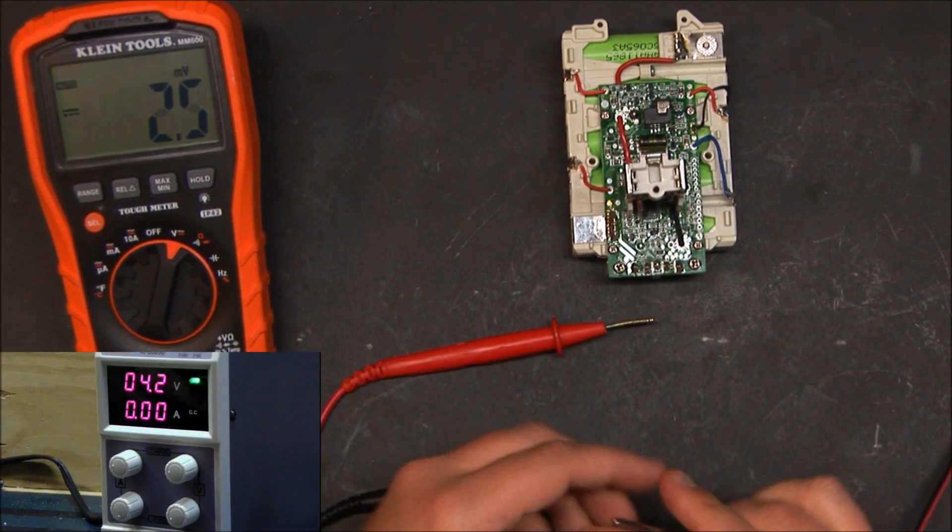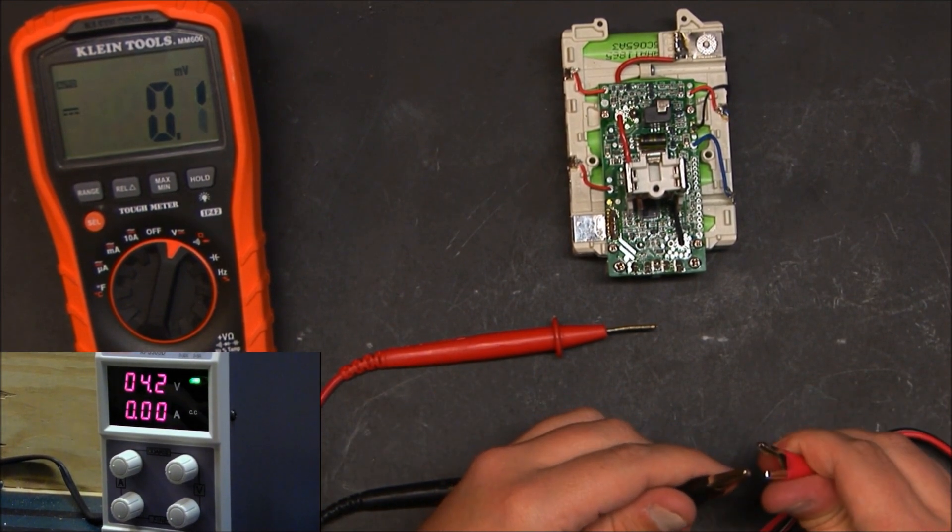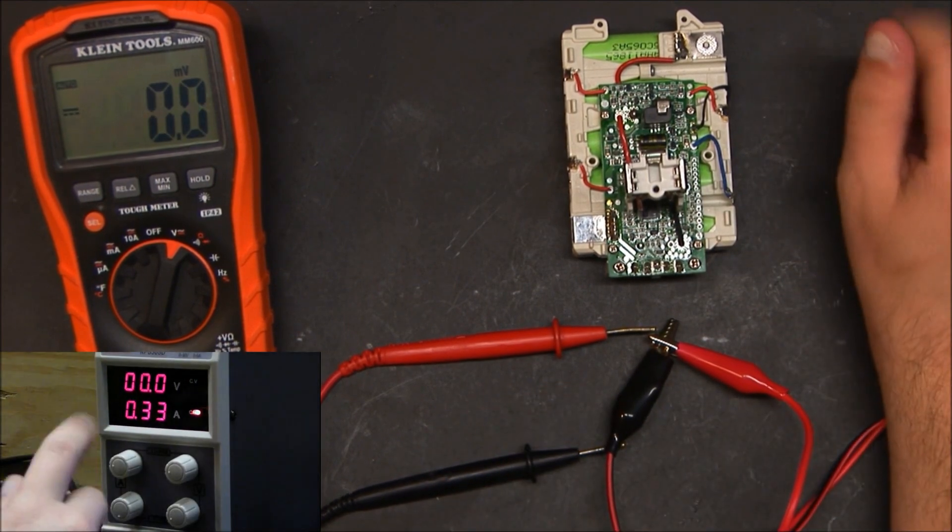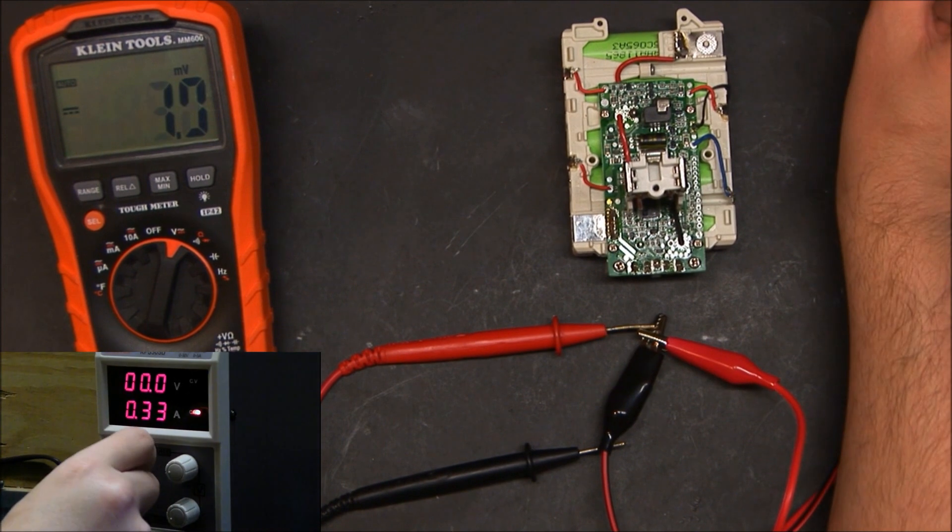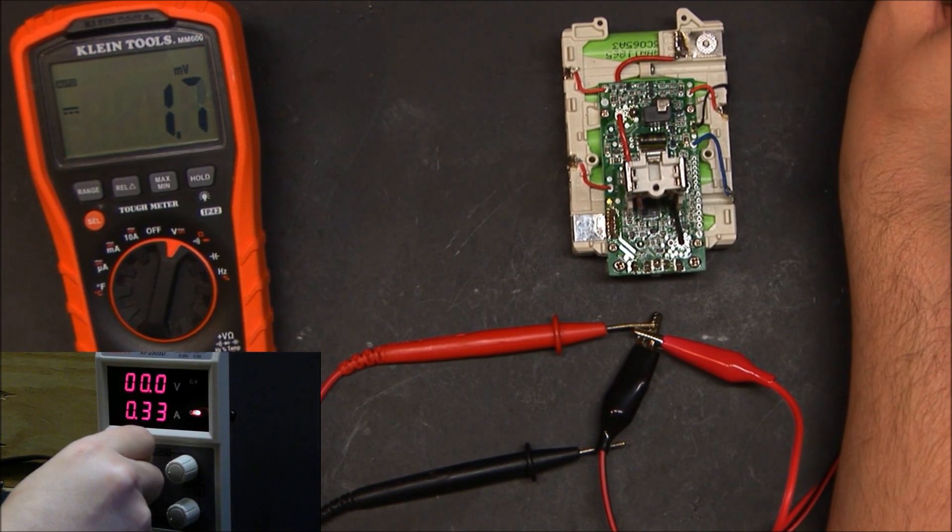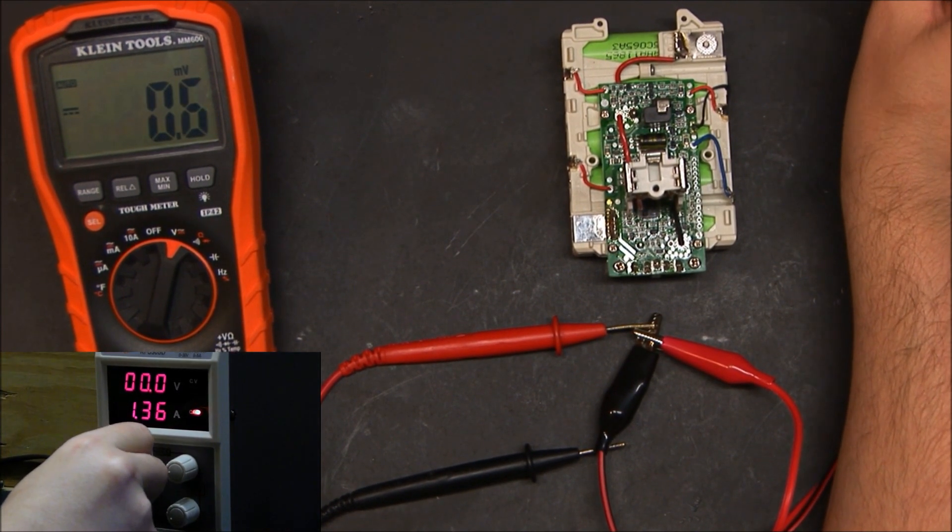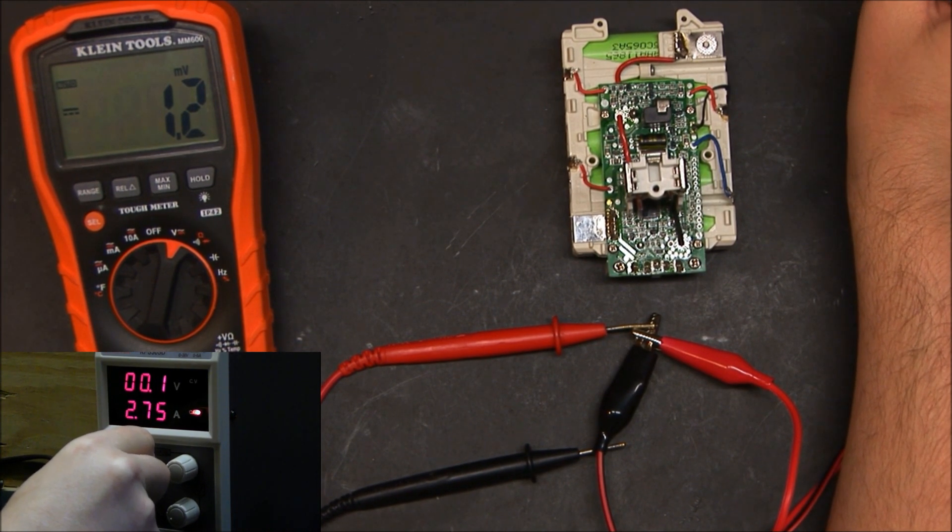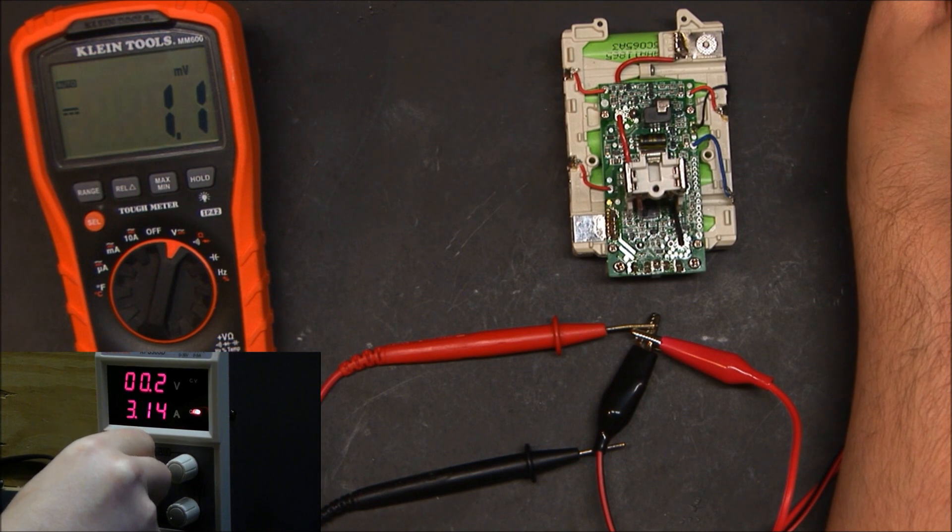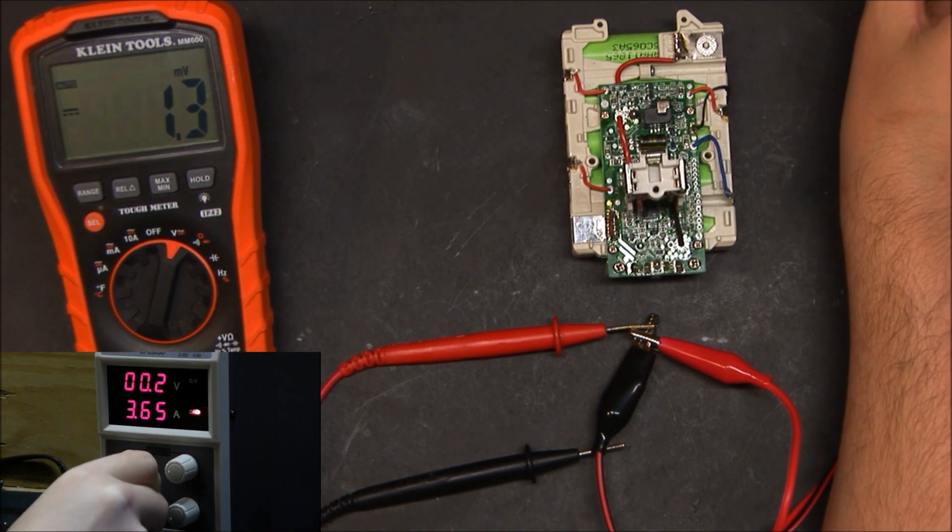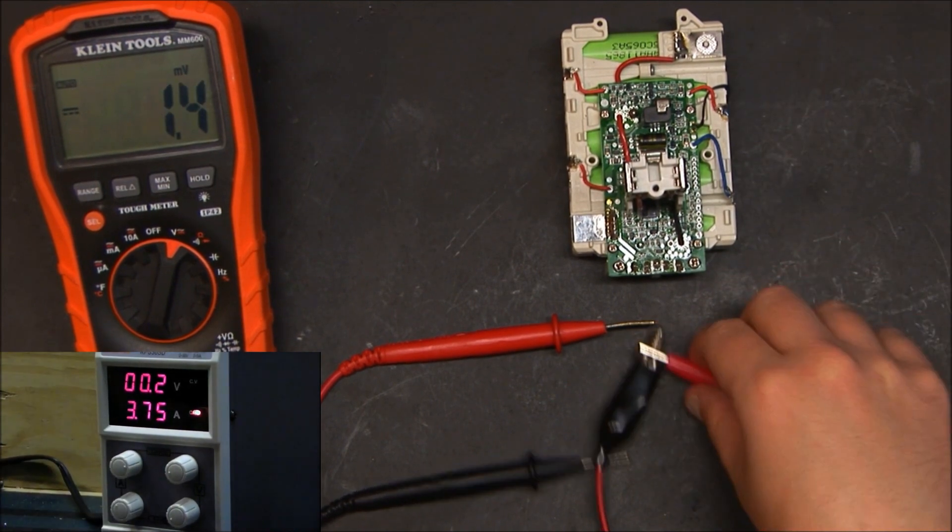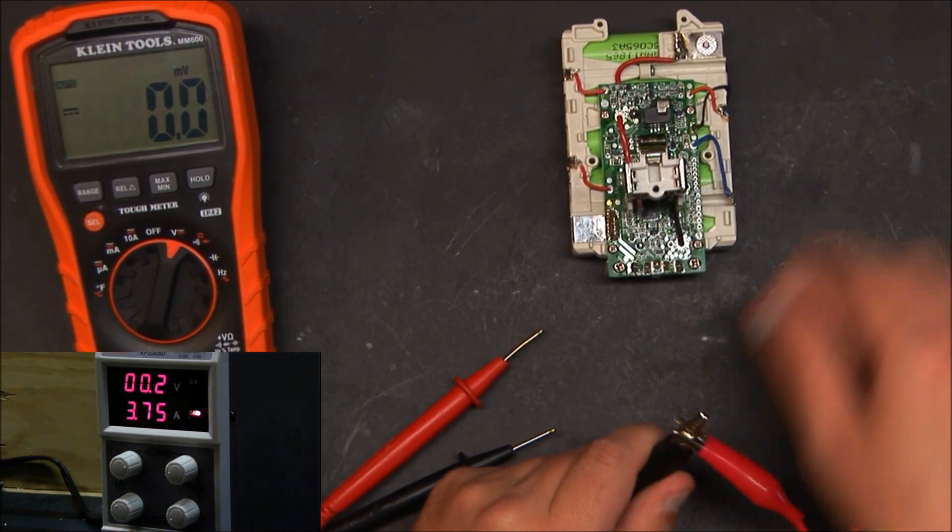Now, to get the constant current, what we want to do is short the leads out. Make sure the current's turned down somewhat. We're going to set the maximum amount of current that this thing is going to put out. I'm going to charge this at about 3.7. I don't want to go all the way to 4 amps, I'm just going to go to 3.7. 3.75.